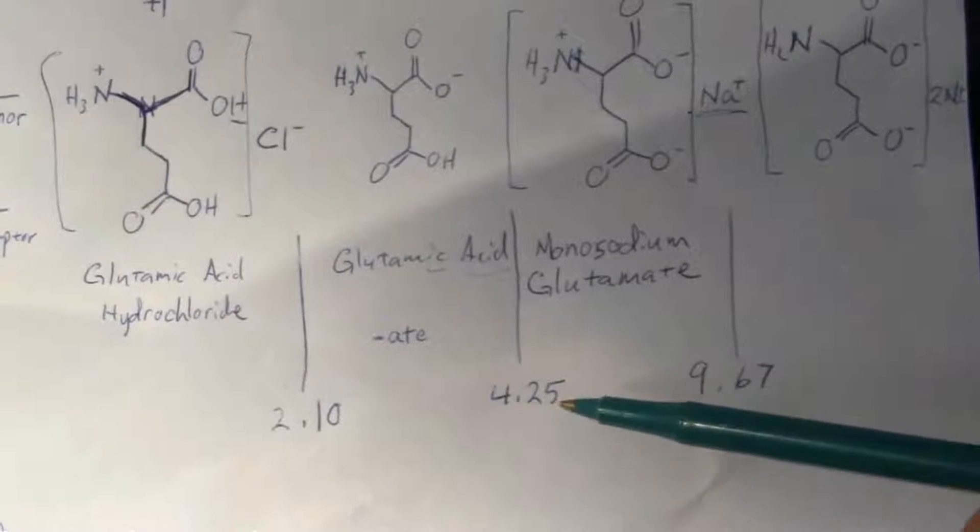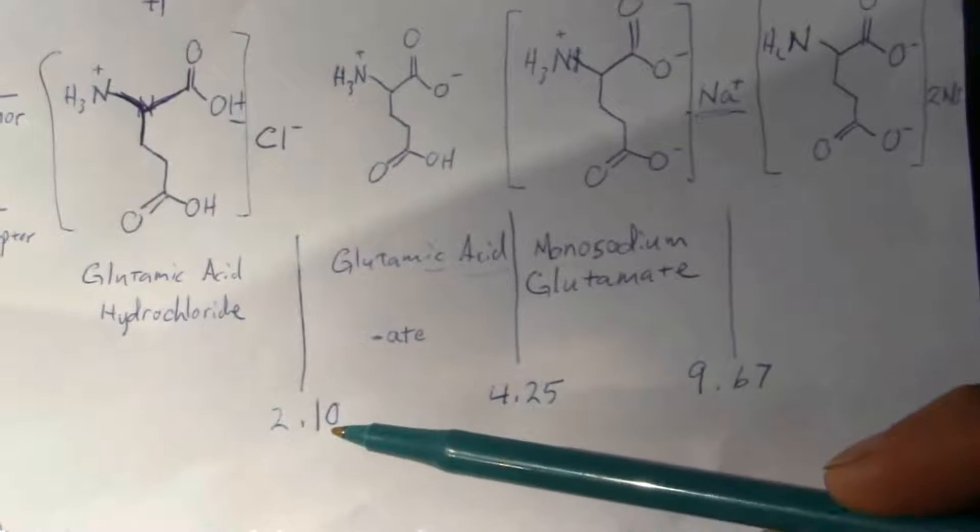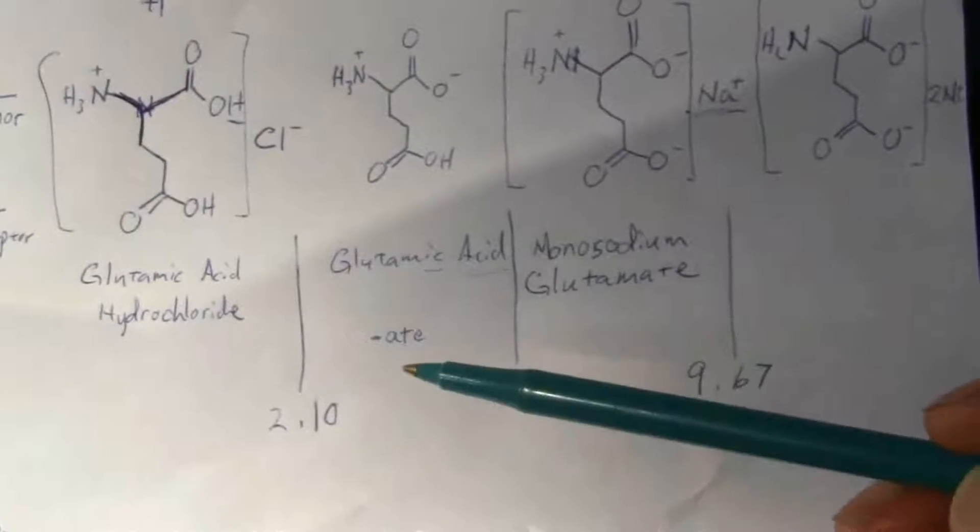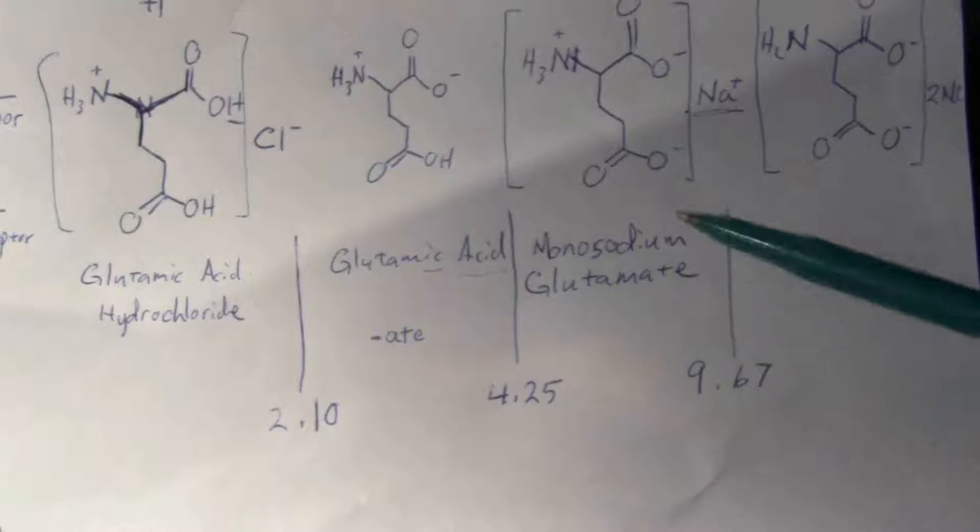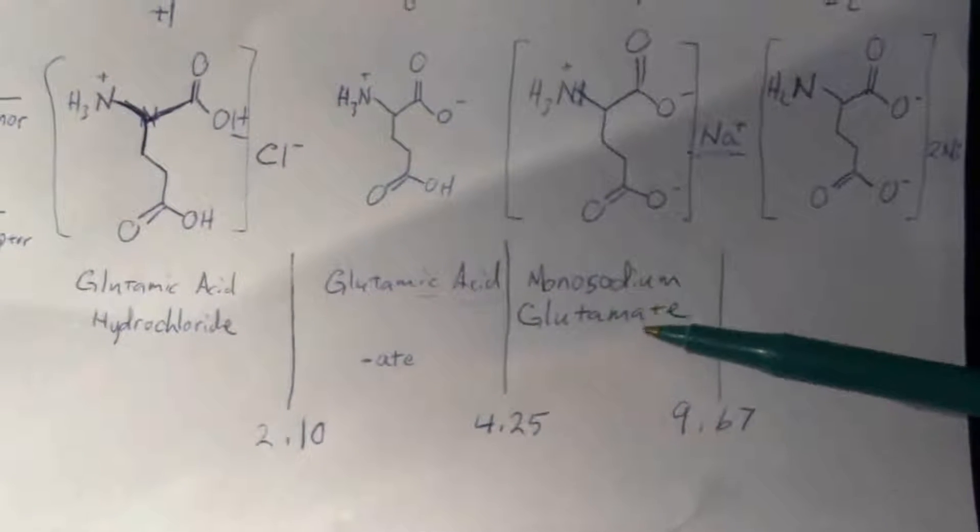If the pH is less than 4.25 but greater than 2.10, you'll have glutamic acid. If it's greater than 4.25 but less than 9.67, you'll have monosodium glutamate.